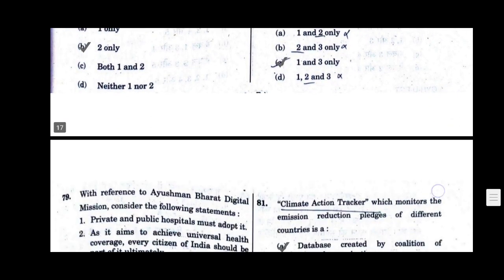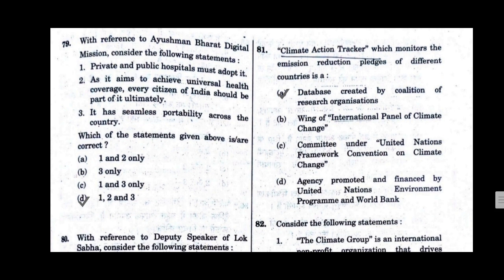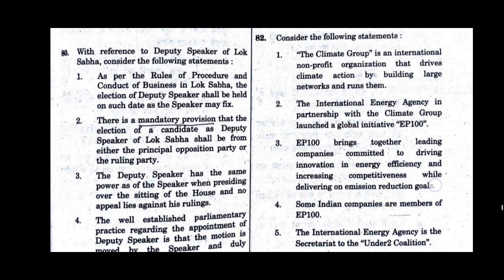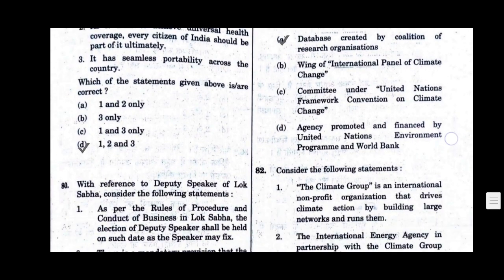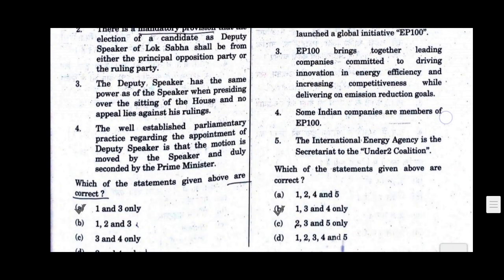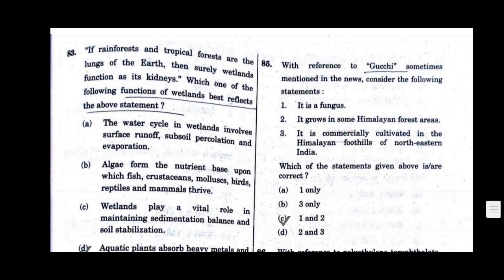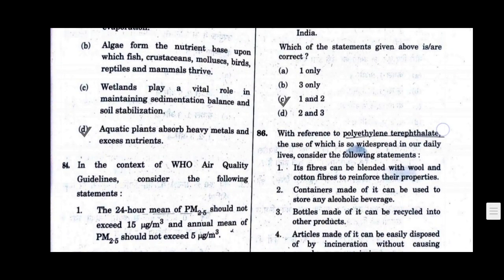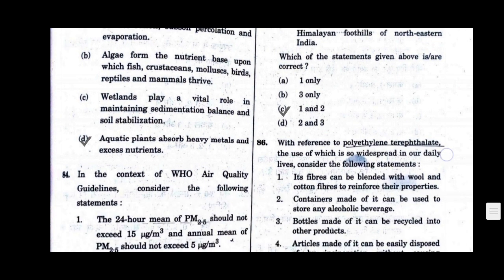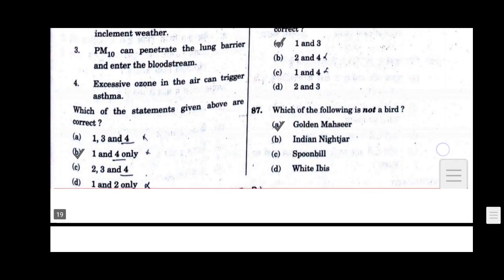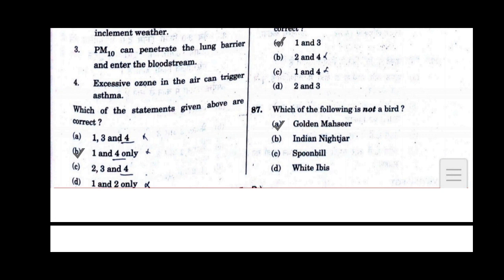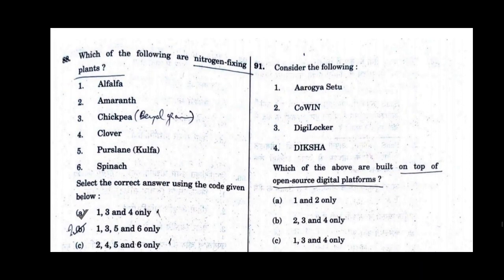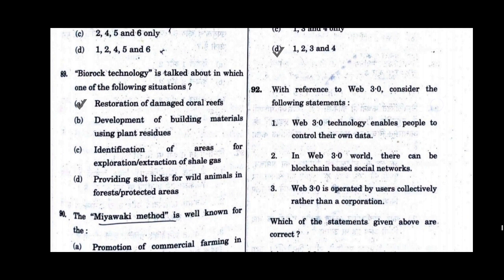Question number 78, option C will be the correct answer. Question number 79, option D will be the correct answer. Question number 80, option A will be the correct answer. Question number 81, option A will be the correct answer. Question number 82, option B will be the correct answer. Question number 83, option D will be the correct answer. Question number 84, option B will be the correct answer. Question number 85, option C will be the correct answer. Question number 86, option A will be the correct answer. Question number 87 — which of the following is not a bird? Option A will be the correct answer: Golden Mahseer. Question number 88, option A will be the correct answer. Question number 89, option A will be the correct answer. Question number 90, option C will be the correct answer.